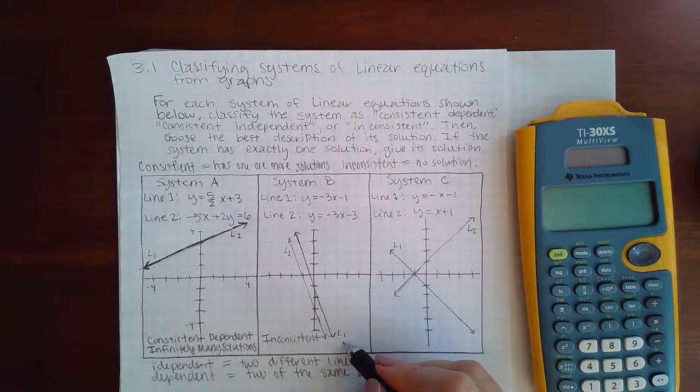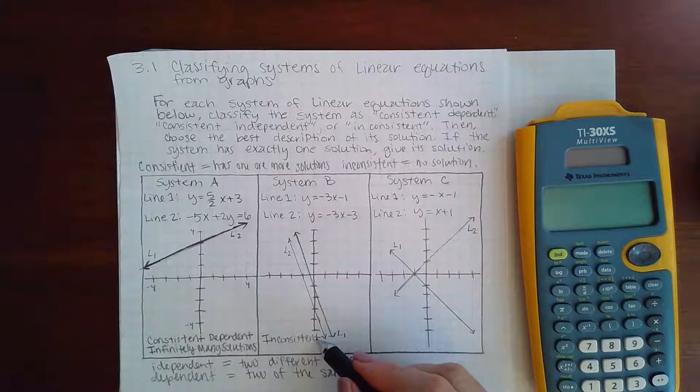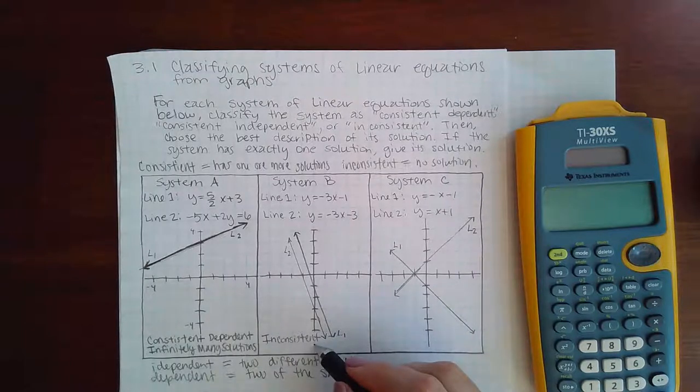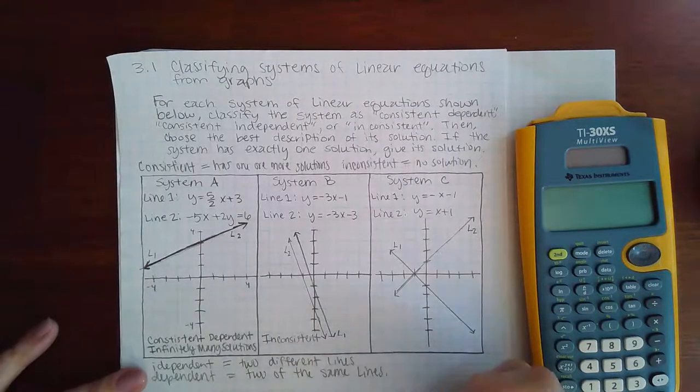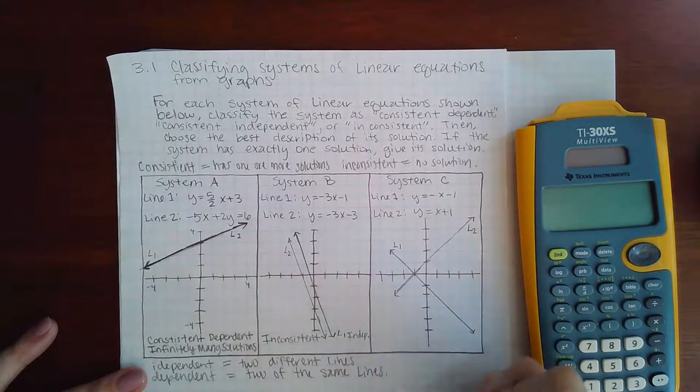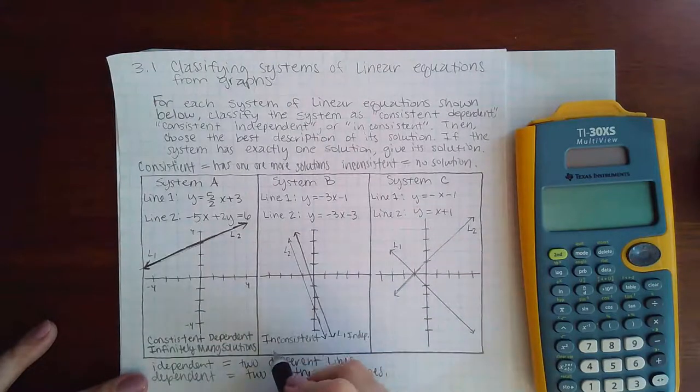They're also independent, but I think in the assignment you're not allowed to say inconsistent and independent or dependent. Once you say inconsistent, you're done with the labeling. But if I would continue labeling, this would be independent as well because they are two different graphs. And then here, the answer would be no solution.